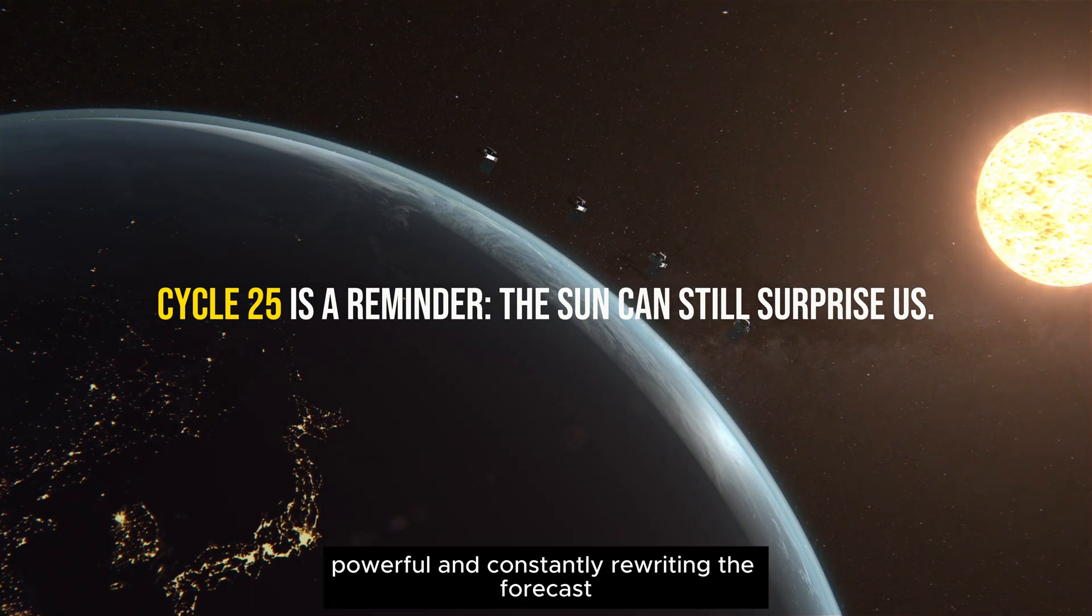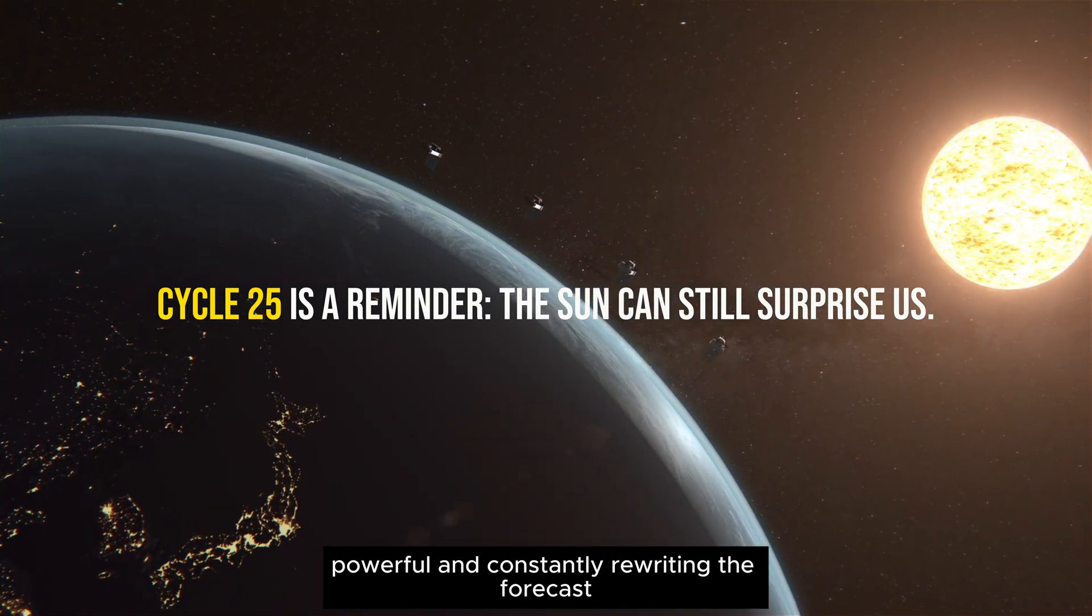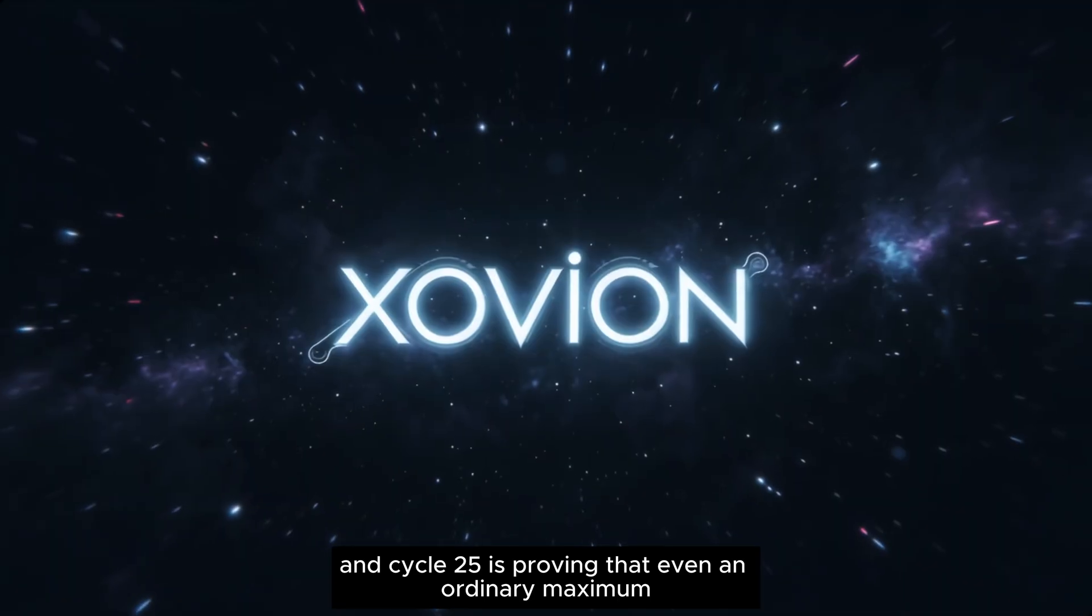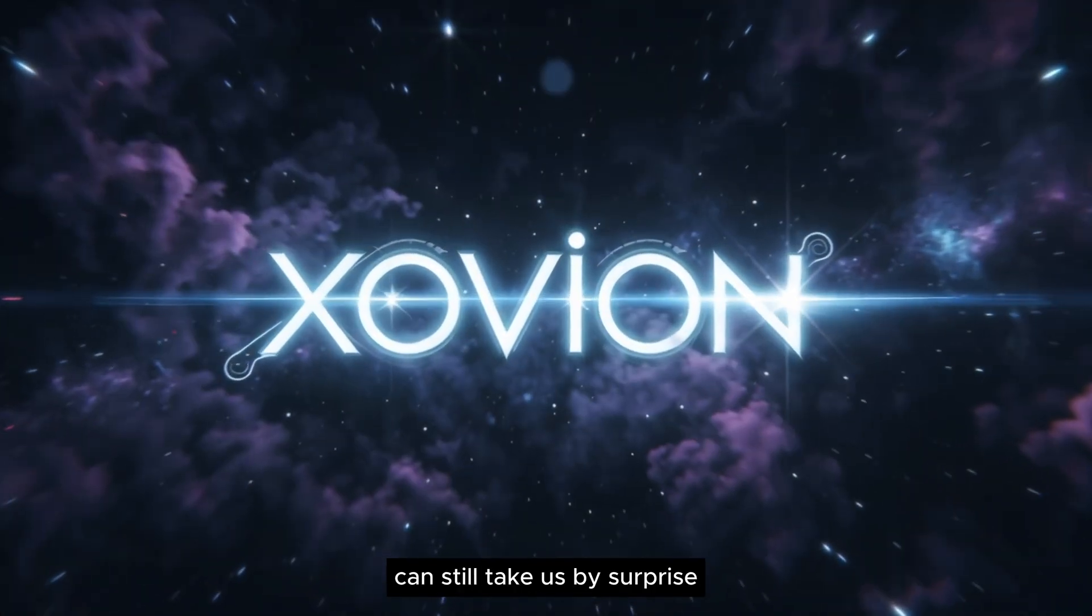The sun is restless, powerful, and constantly rewriting the forecasts. And cycle 25 is proving that even an ordinary maximum can still take us by surprise.